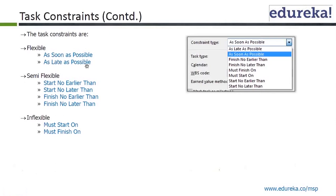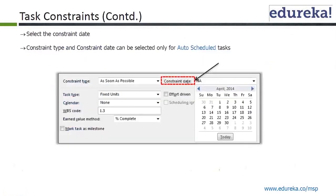Semi-flexible constraints include start no earlier than, start no later than, and finish no earlier than — you have some date assigned but there is some buffer. The inflexible constraints are must start on and must finish on. These are the categories of task constraints. Note that the constraint date can be selected only for auto-scheduled tasks.